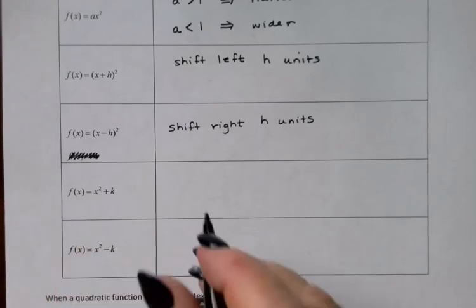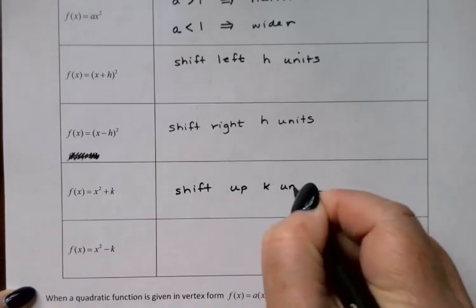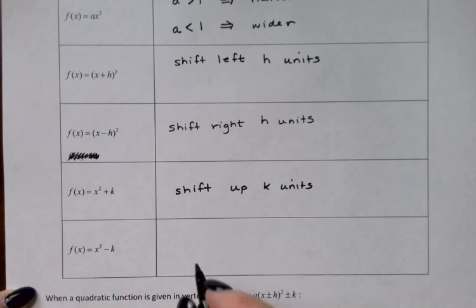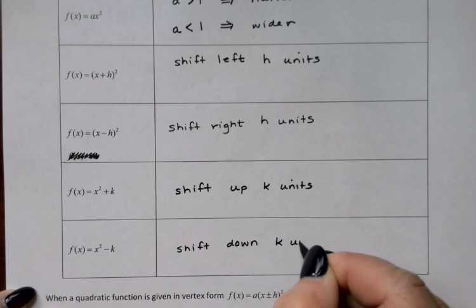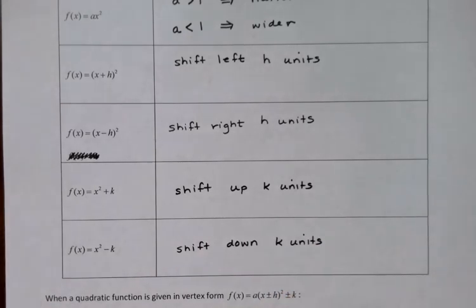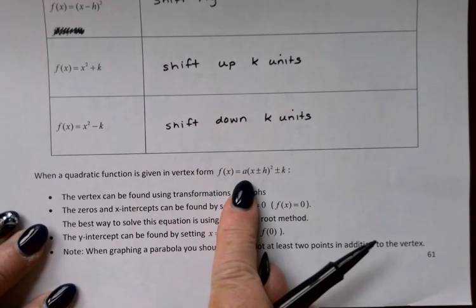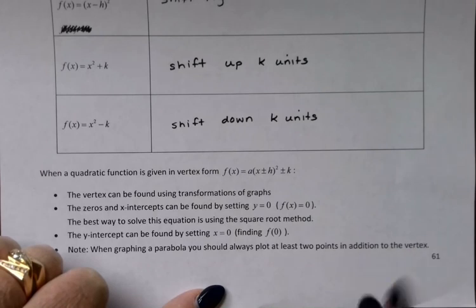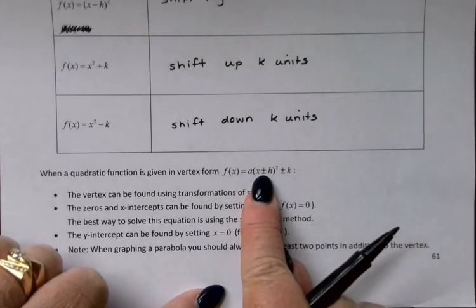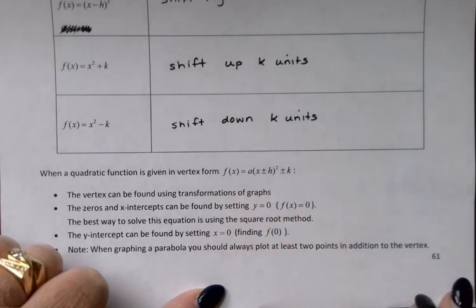f of x equals x squared plus k. We're shifting up k units. And x squared minus k. We're shifting down k units. So, what this tells us is that if we have a quadratic function in vertex form, we can actually figure out where the vertex is going to be using transformations of graphs. What's inside the parentheses tells us how far left or right to move. And what's outside the parentheses tells us how far up or down to move.